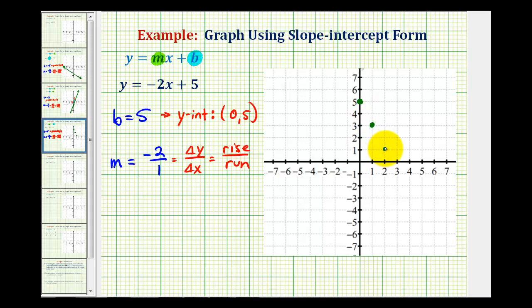Down 2, right 1. Down 2, right 1, and so the line y equals negative 2x plus 5 will pass through these points and look something like this.